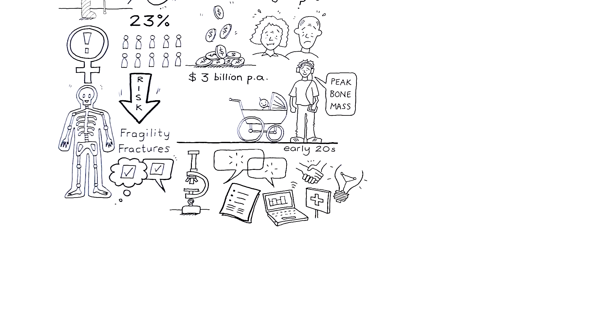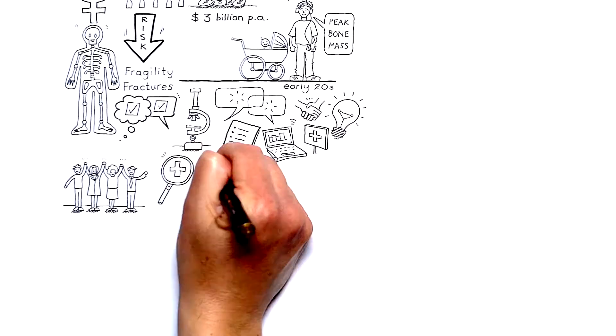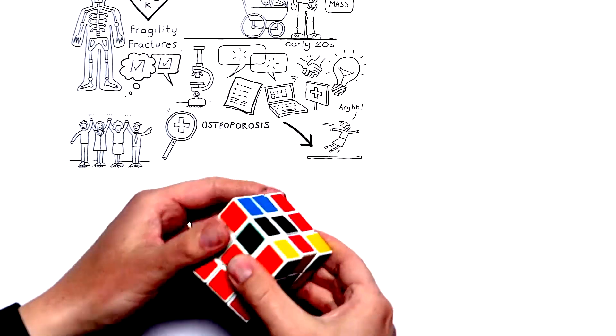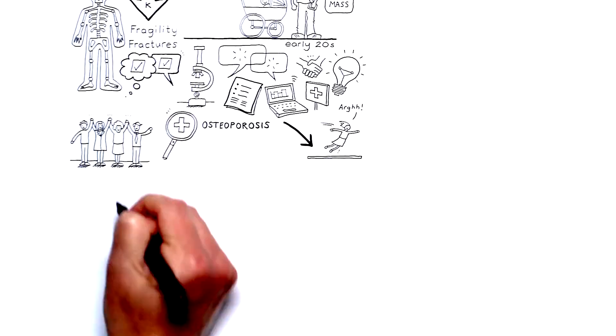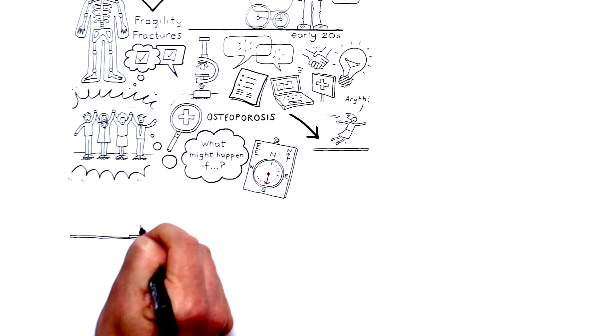We are doing a lot. Many skilled people are working to improve the identification and treatment of osteoporosis and reduce the risk of falls and fractures. But our health system is complex and it's difficult to see the collective impact of our efforts, or what might happen if we do things differently.